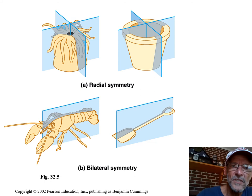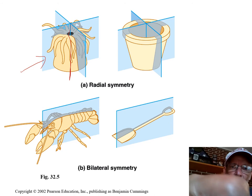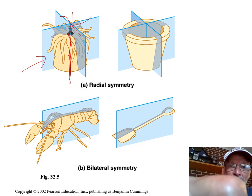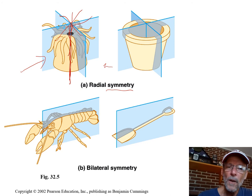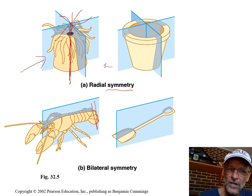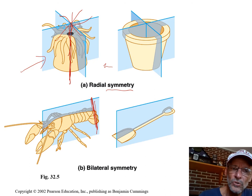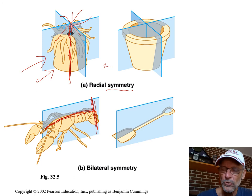If you're radially symmetrical like this sea anemone — which is like an upside-down jellyfish — you have a center because you're circular. Any one of an infinite number of planes that goes through that center will cut you into roughly equal halves. That's what symmetry means. But if you're bilaterally symmetrical, there's only one plane that cuts you into symmetrical, mirror-image halves, going through the longitudinal axis from your front end to your back end. Radially symmetrical animals don't have a front end and a back end.